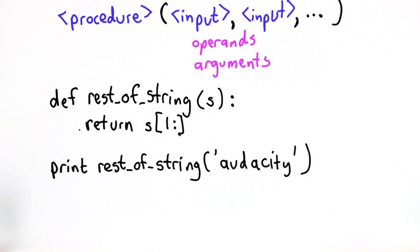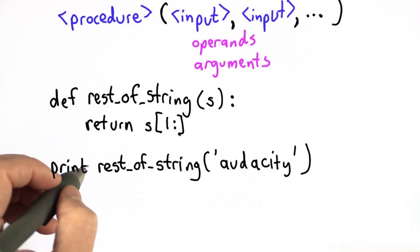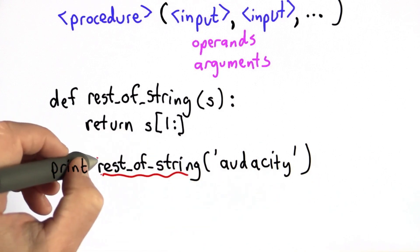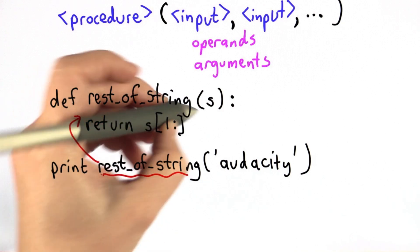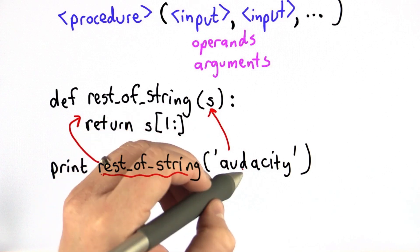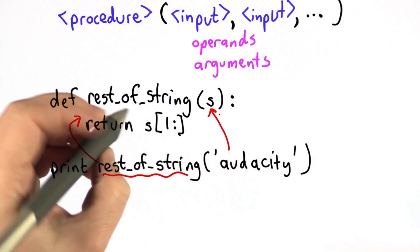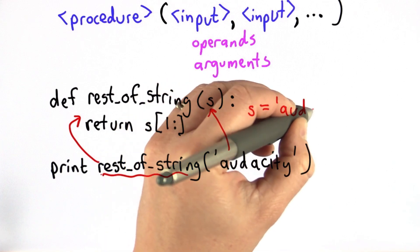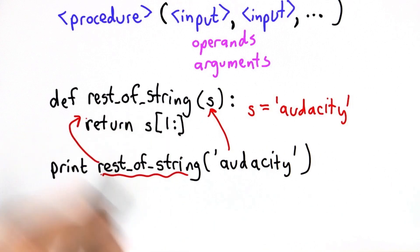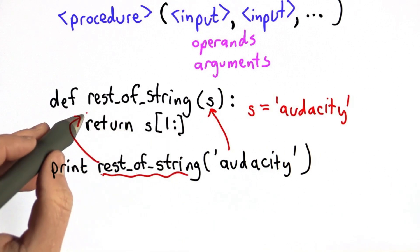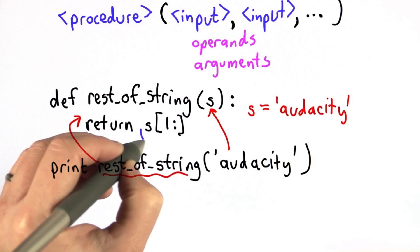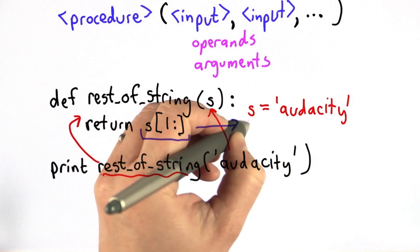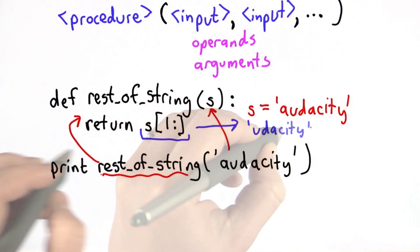What happens when we call a procedure like this, execution will jump into the body of the procedure. So we can think of what the interpreter is doing is now instead of running the code here, the interpreter will move. When we call a procedure, it will jump to run the code inside the procedure. It will assign to the parameters the values passed in as the inputs. So we can think of this as there being an assignment that says now the value of s is the value of this input that was passed in. And now we're going to evaluate the body of the procedure. In this case, there's only one statement. It's this return statement. We're going to find this value, so s[1:]. The result of that is going to be the string udacity.